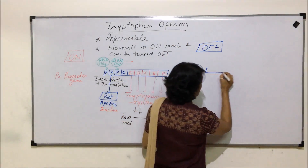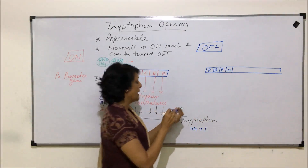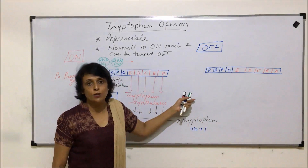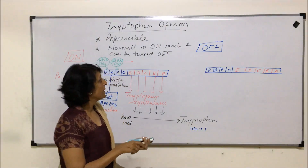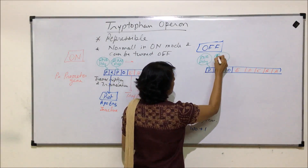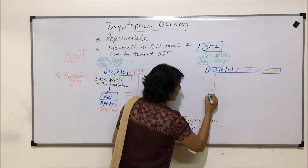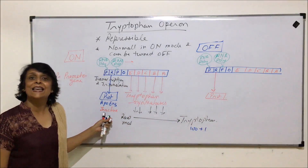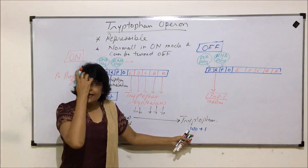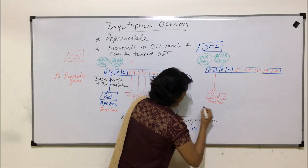Let us now talk about the OFF situation — how will this be turned off. We draw the same arrangement: a promoter, a repressor gene, again a promoter and an operator gene as the regulatory part, and five structural genes A, B, C, D, and E. At both promoter sites we have RNA polymerase attached. The repressor gene produces a protein which normally remains inactive, and the structural gene enzymes are being produced.